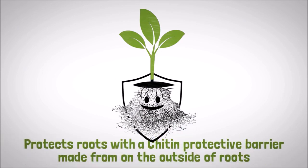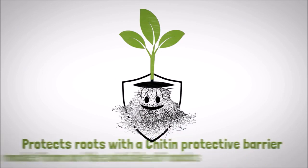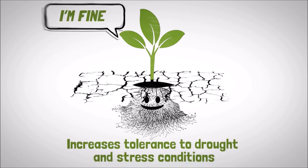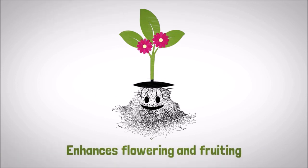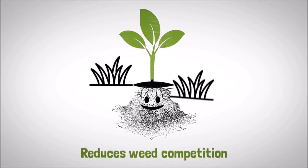Protects roots by forming a protective barrier made from chitin on the outside of roots. Increases tolerance to drought and stress conditions. Enhances flowering and fruiting. Reduces weed competition.